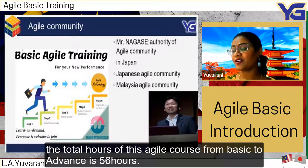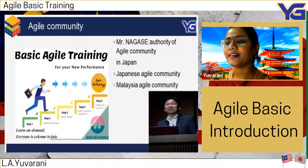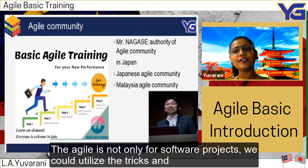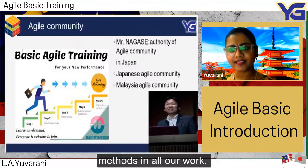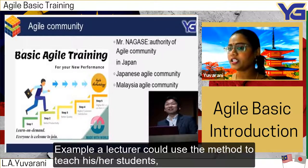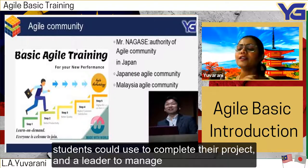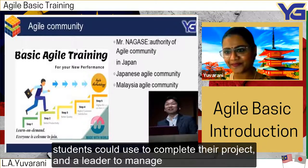This is Mr. Nagase, the agile course trainer. He has his own agile community team. The total hours of this agile course from basic to advanced is 56 hours. Agile is not only for software projects — we could utilize the tricks and methods in all our work. For example, a lecturer could use the method to teach students.